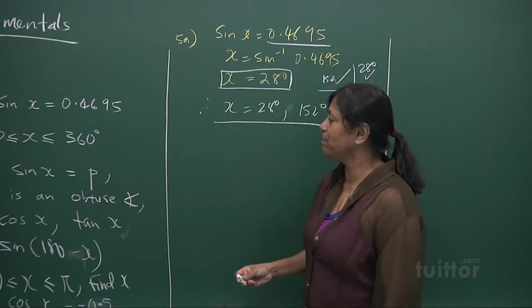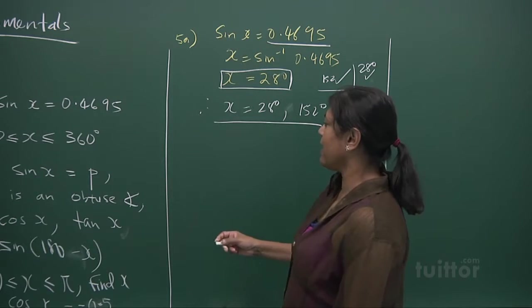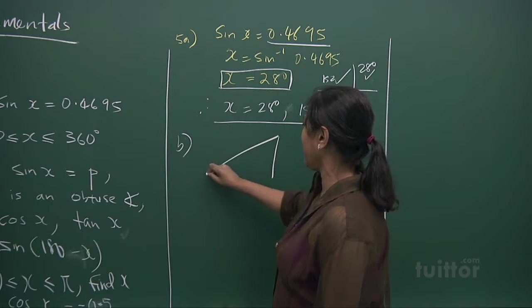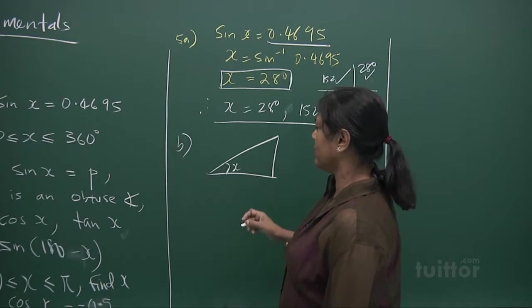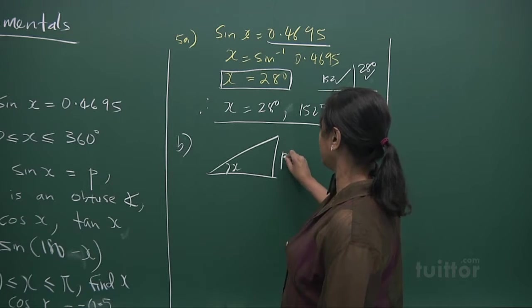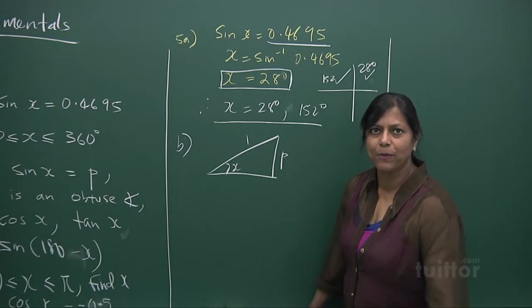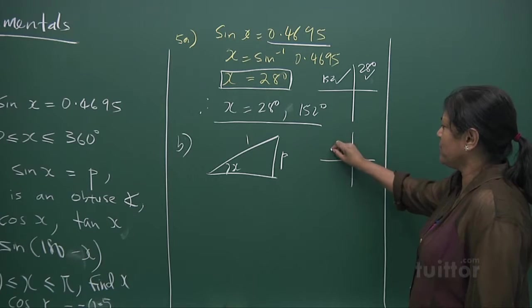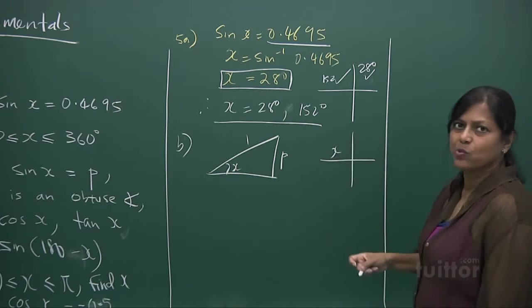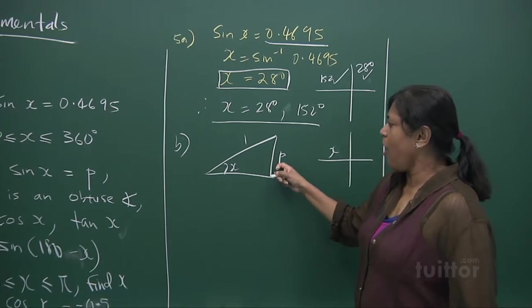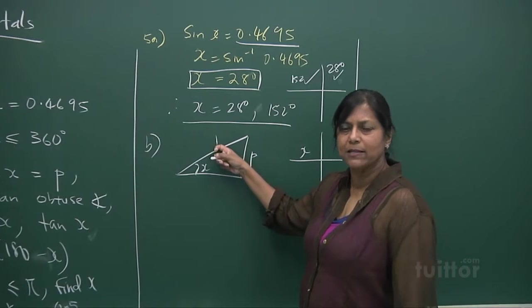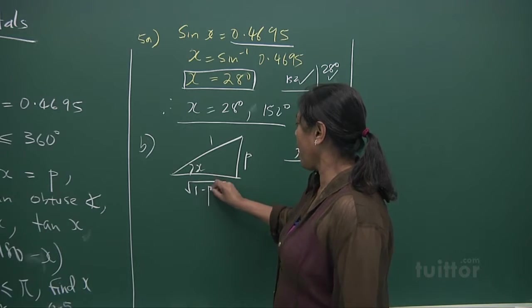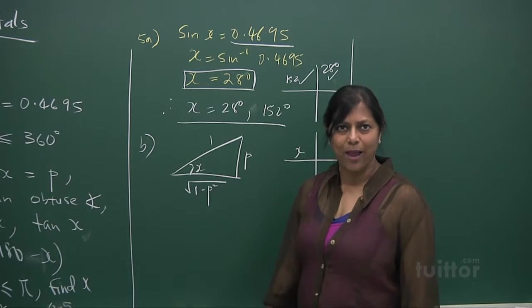Now, in part B, they tell us that sine x is P, and the x is an obtuse angle. We just draw it this way. Sine x is P over 1. And have that mental picture that x is obtuse. X is in this quadrant. It's P opposite over the hypotenuse. This adjacent will be using Pythagoras theorem, 1 minus P squared.